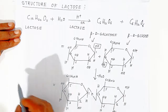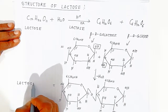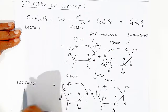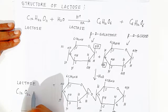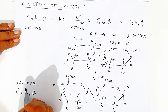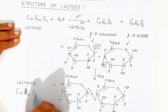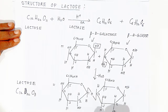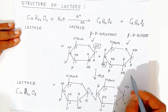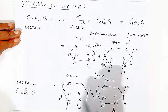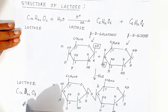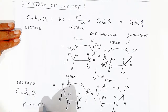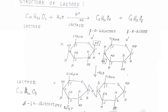This is the structure of lactose, with molecular formula C₁₂H₂₂O₁₁. Because it contains a beta-1,4 glycosidic linkage, the bond is called a beta linkage. This completes the explanation of the structure of lactose.